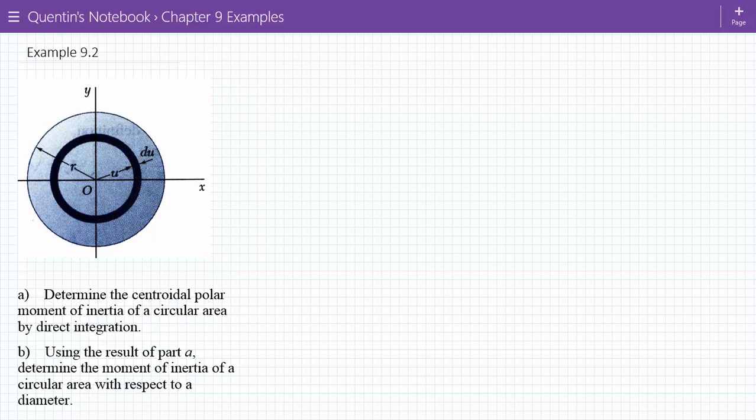We're supposed to determine the centroidal polar moment of inertia of this area by direct integration. Then part B, we're supposed to use the result of A to determine the moment of inertia with respect to a diameter. We'll come back to that.